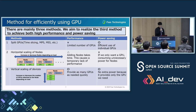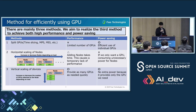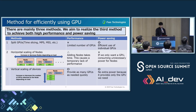The second method is to scale nodes with GPUs horizontally. This method allows us to increase or decrease the number of GPUs, which can provide better performance than the first method. However, adding nodes takes time, so there is a possibility to cause a temporary lack of performance. And if the user only wants GPUs, it consumes unnecessary power of nodes.